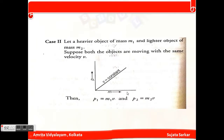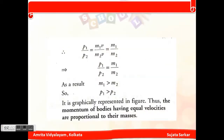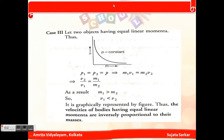Case 2: a heavier object of mass m1 and a lighter object of mass m2, both moving with the same velocity. So p1 equals m1·v and p2 equals m2·v. The graph is p versus m at constant velocity. Therefore p1 by p2 equals m1 by m2. Since m1 is much greater than m2, p1 is much greater than p2. The momenta of bodies having equal velocities are proportional to their masses.